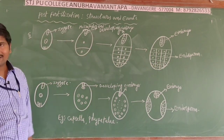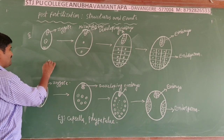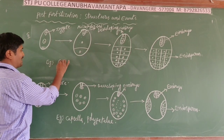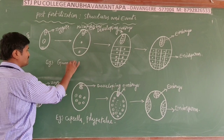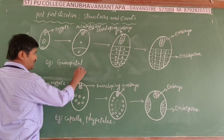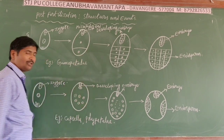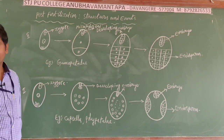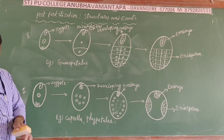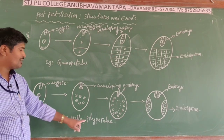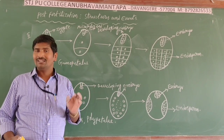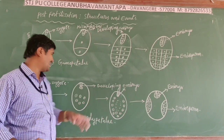The best example for the cellular type of endosperm is Gamopetalae, which is also a subclass of dicotyledons. The three subclasses of dicots are Polypetalae, Gamopetalae, and Monochlamydeae.